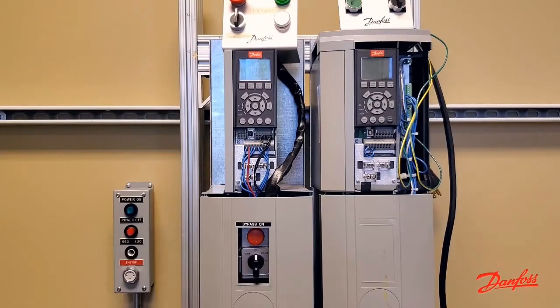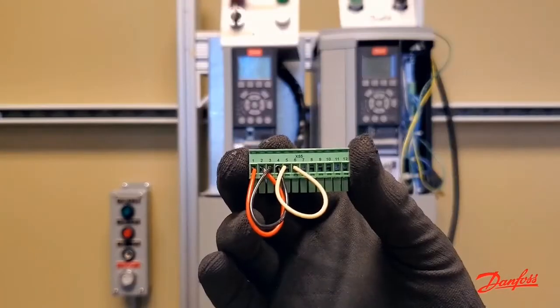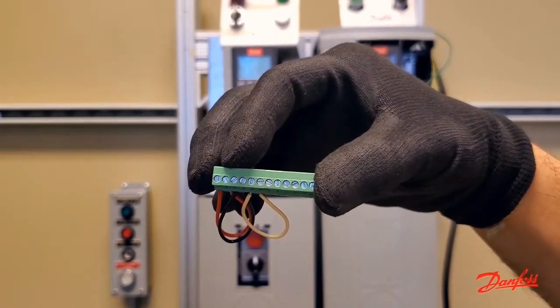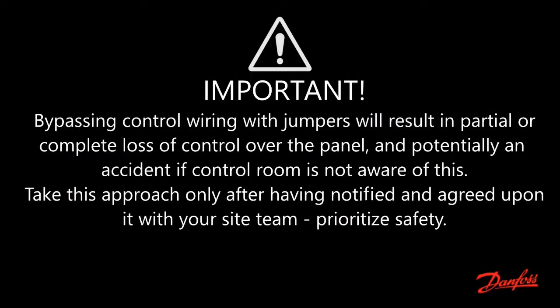One quick and efficient way to test this idea is by replacing all three of those dry contacts with jumpers, which would eliminate the uncertainty. Do keep in mind that by doing this you will be effectively overriding any safeties that may be in place. Make sure you consult with your site team before doing this.